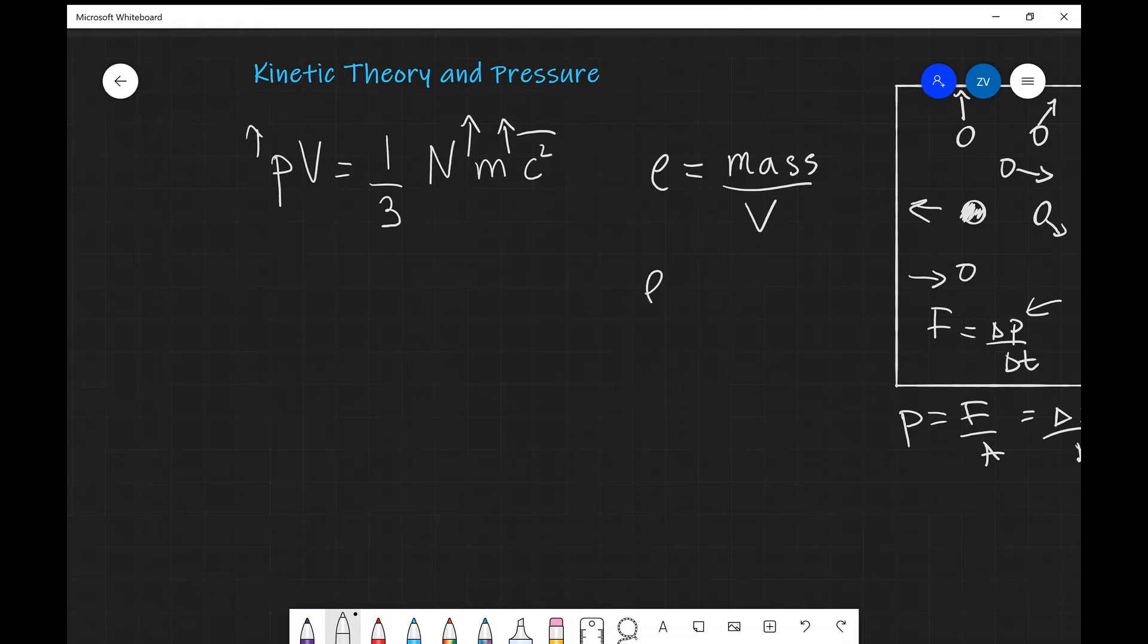Now the total mass of the gas is going to equal the number of molecules N multiplied by the mass of an individual molecule m. Then what we're going to do is divide by the total volume V.